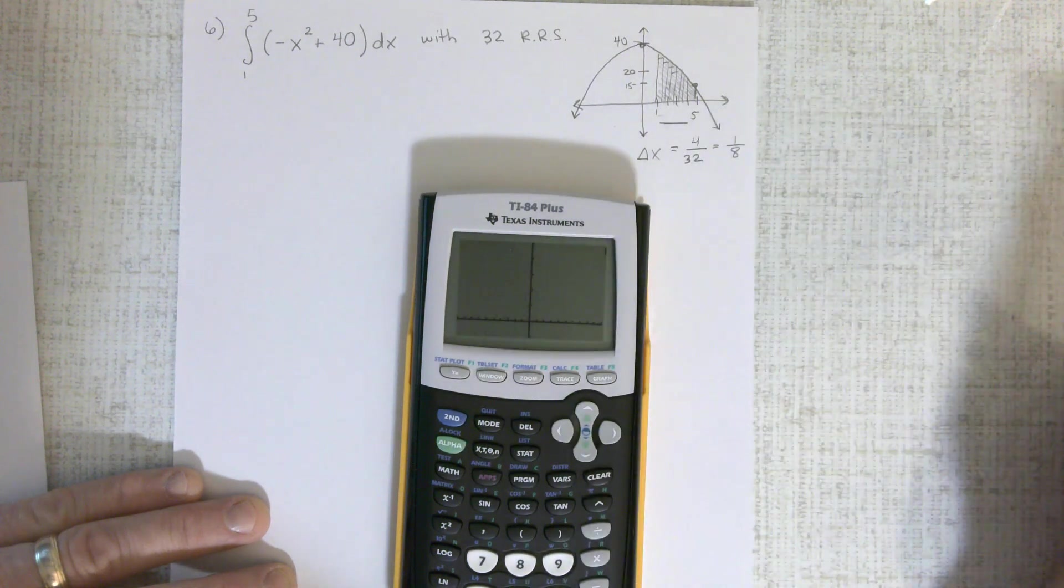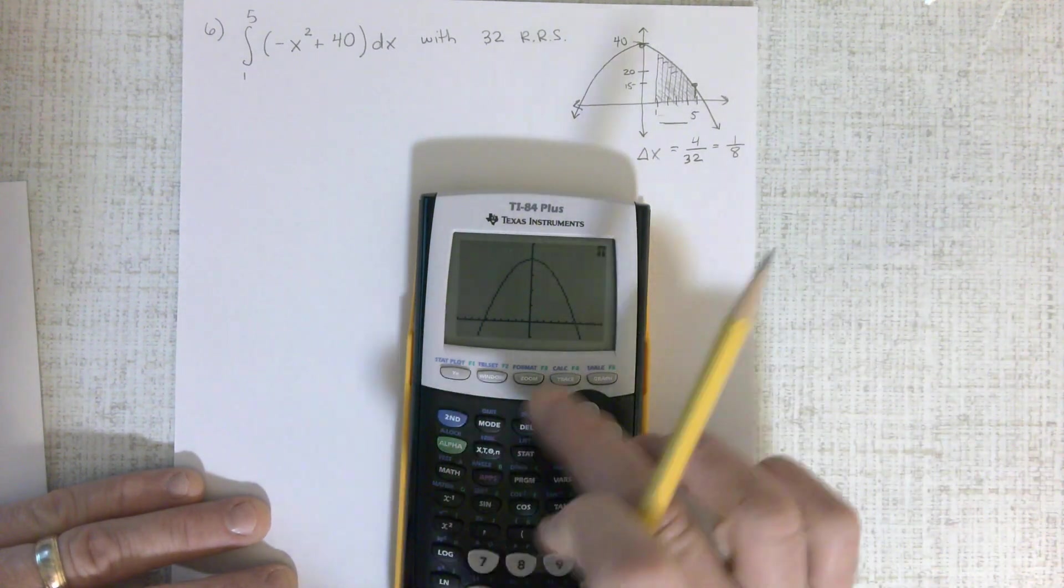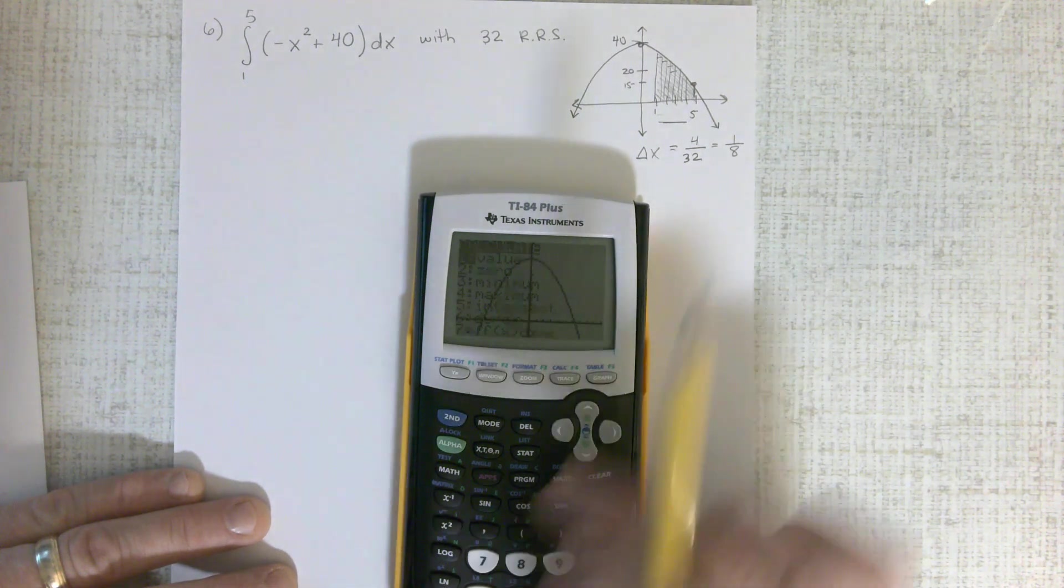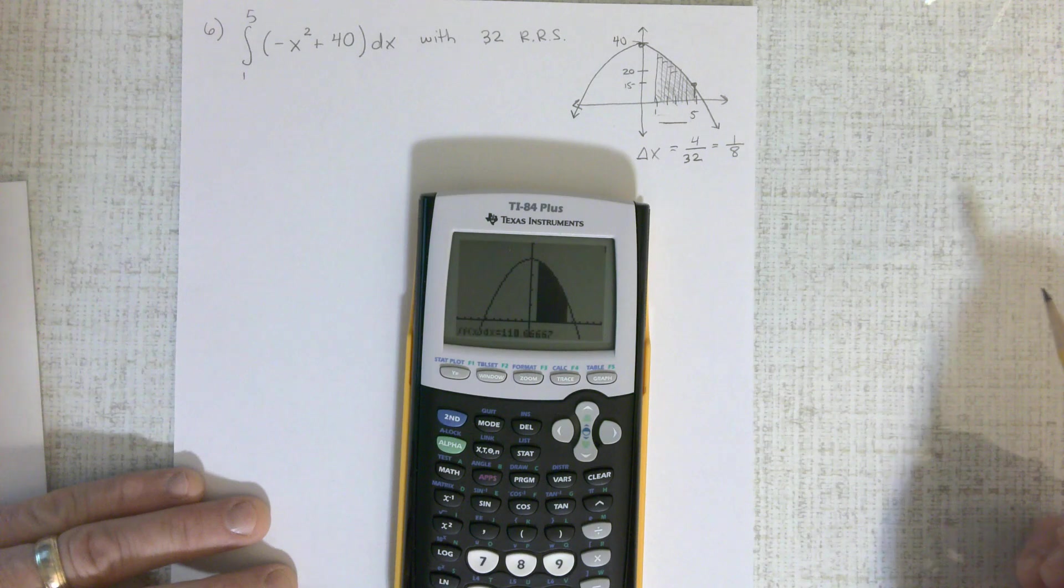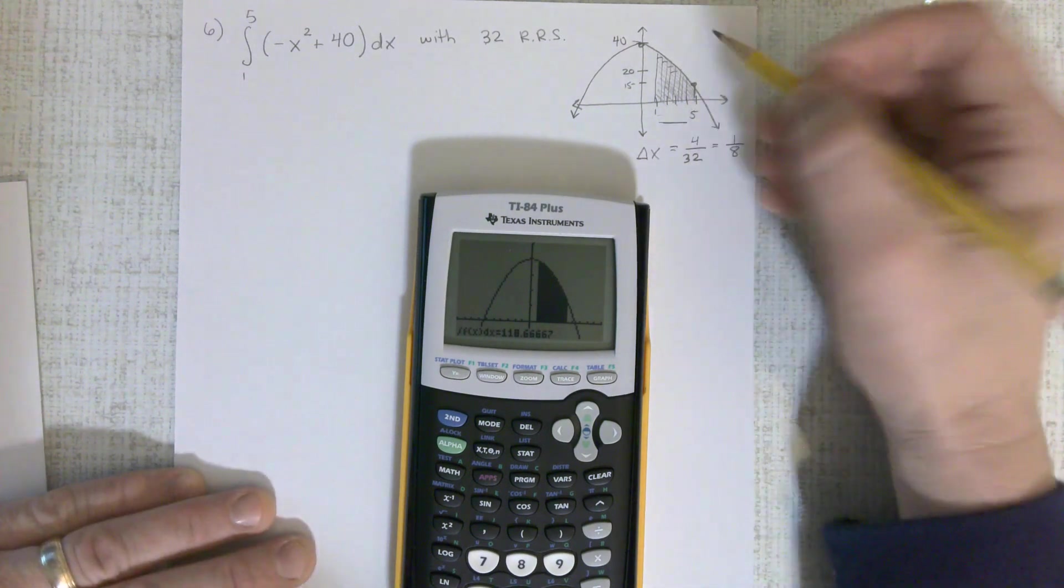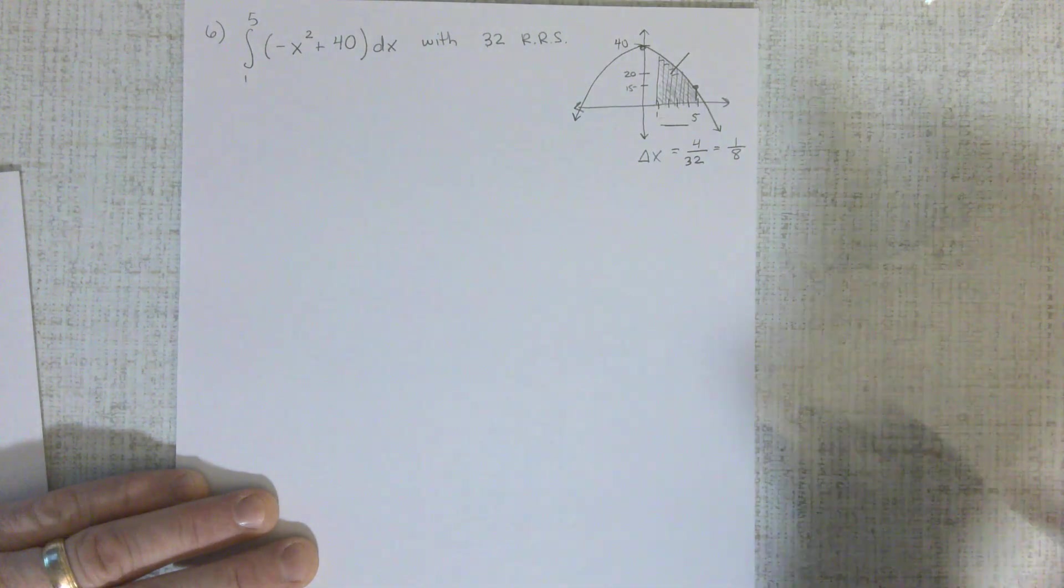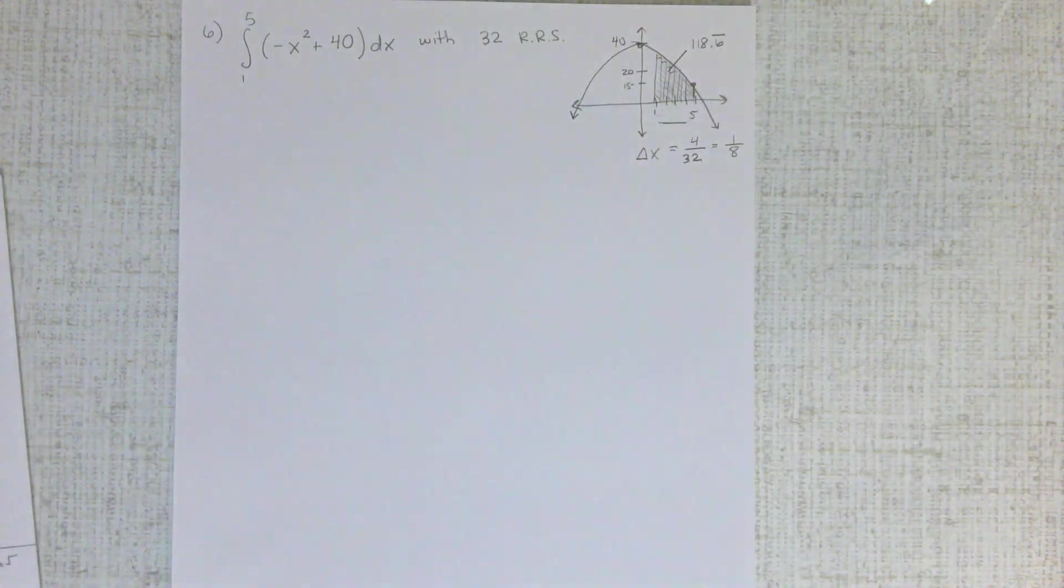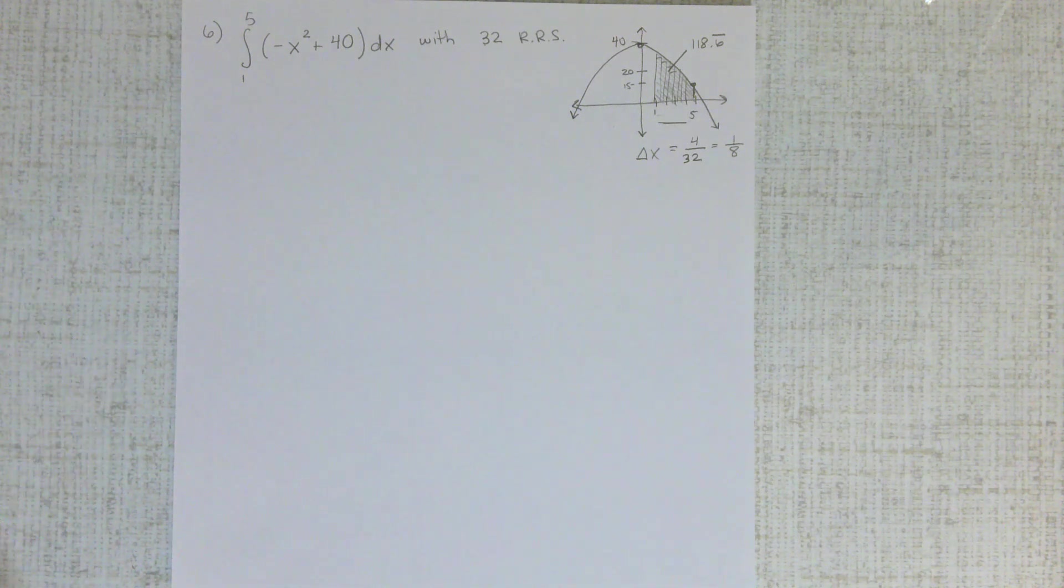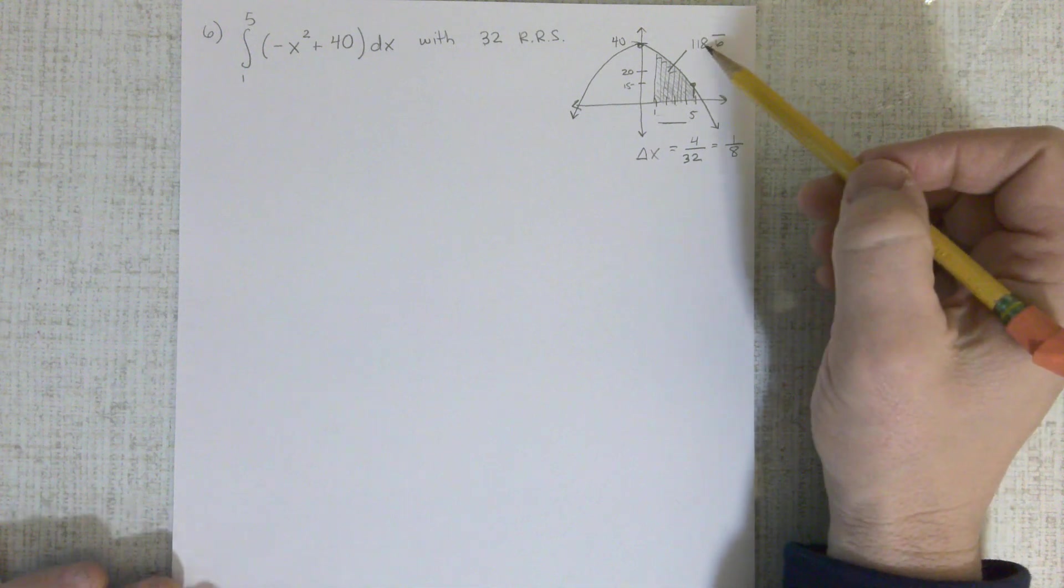And when I graph this, there's that downward-facing parabola. Second calc, I'm going to take the integral from 1 to 5. There's that area shaded in. Again, that area is 118.6. However, all of my rectangles are now smaller than that, so I'm going to be a little bit under this.